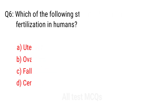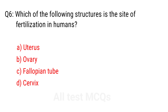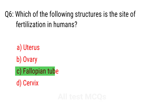Q6. Which of the following structures is the site of fertilization in humans? The right answer is option C: Fallopian tube.